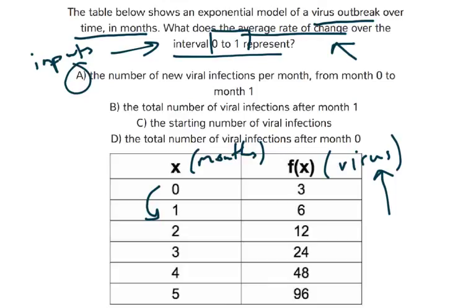Let's go through B, C, and D to see if we can find something better. B says: the total number of viral infections after month 1. Well, that's a static number — that number isn't changing. And remember, this is asking for the average rate of change. So I'm crossing off B.